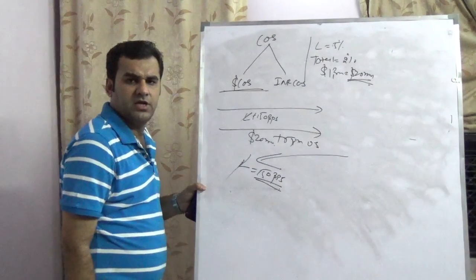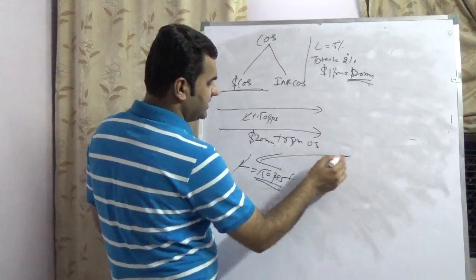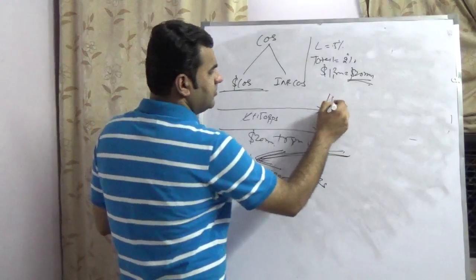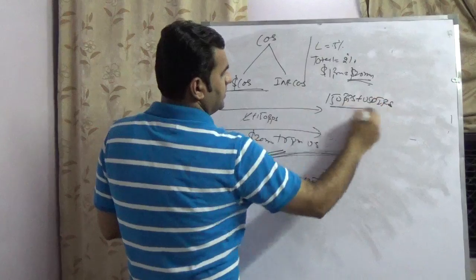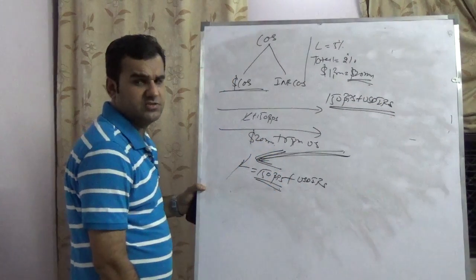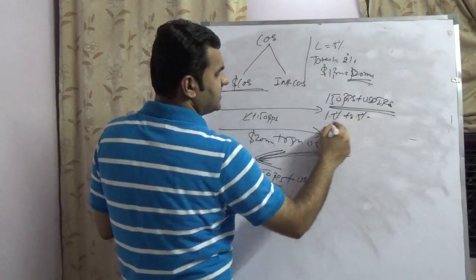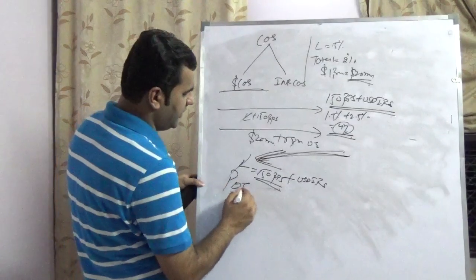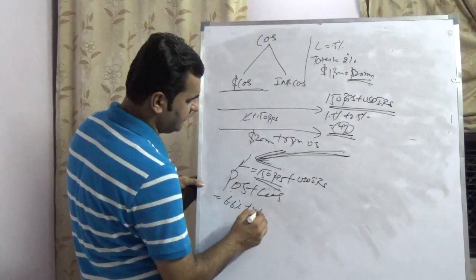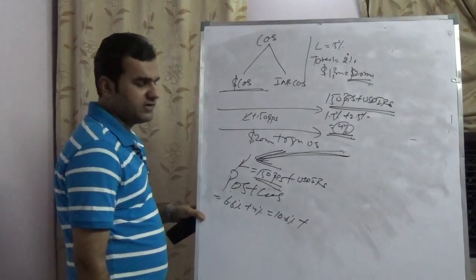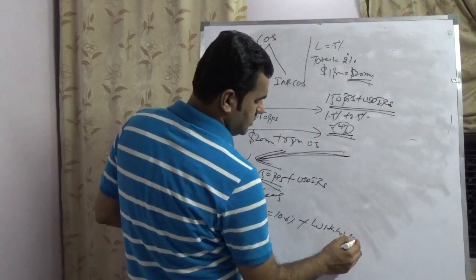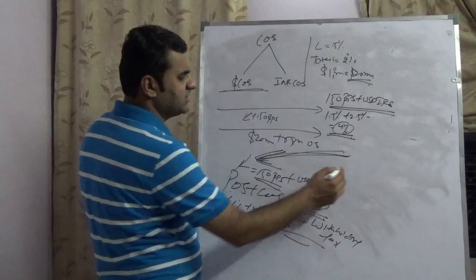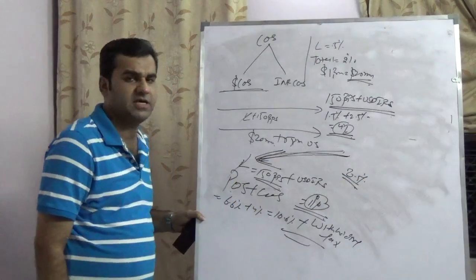The 150 basis points remain as Infosys's fixed liability. Since they are receiving LIBOR, they hedge the fixed leg by paying USD IRS. Assuming a 10-year USD IRS rate of 2.5 percent, the total becomes 1.5 percent plus 2.5 percent, which is roughly 4 percent from COS. So the net total liability in Infosys's books would be POS (6.6 percent) plus COS (4 percent) equals roughly 10.6 percent, plus the impact of withholding tax — approximately 11 percent overall.